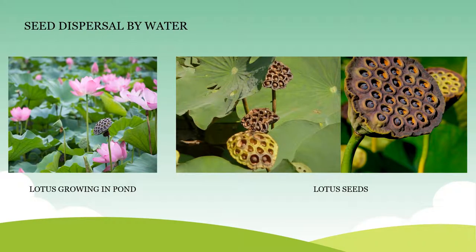Now we will discuss about seed dispersal by water. Lotus seeds get dispersed by water. Lotus grows in water and its seeds are heavy. So these seeds fall to the bottom of the water and are carried by the flow of water, and get germinated wherever there are favorable conditions. Seeds of almost all water plants get dispersed by water.